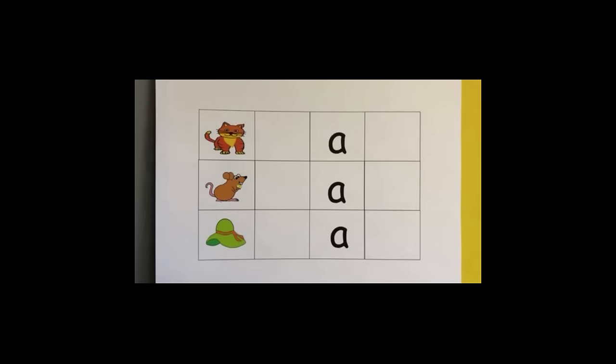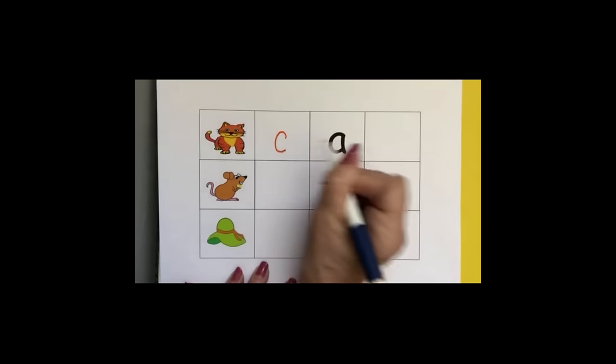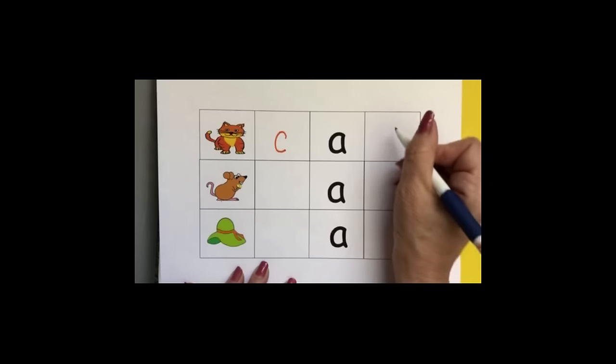This is basically the same activity, but a little different structure. So again, we have cat, and we want kids to put in the C. They have the A, and then the T.